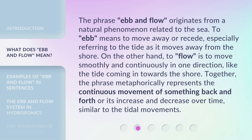The phrase 'ebb and flow' originates from a natural phenomenon related to the sea. To ebb means to move away or recede, especially referring to the tide as it moves away from the shore. On the other hand, to flow is to move smoothly and continuously in one direction, like the tide coming in towards the shore. Together, the phrase metaphorically represents the continuous movement of something back and forth, or its increase and decrease over time, similar to tidal movements.